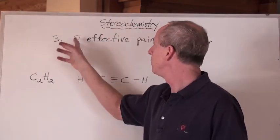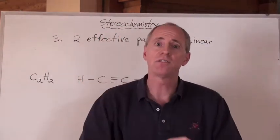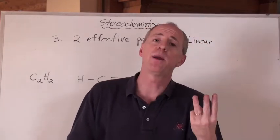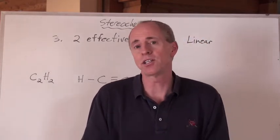But now look, number three would be two effective pairs. So you have four effective pairs, and you have three effective pairs, two effective pairs. So what kind of shape do you have?